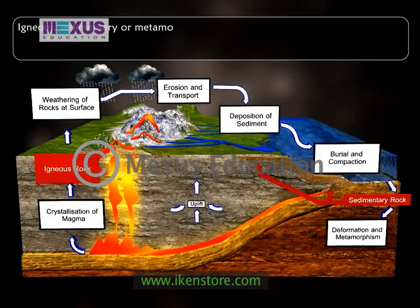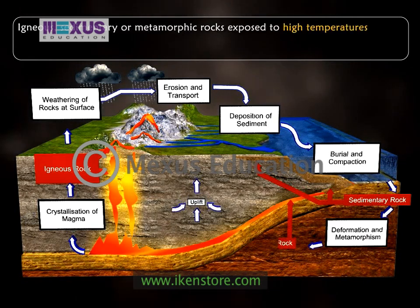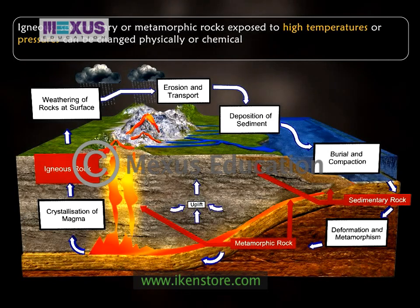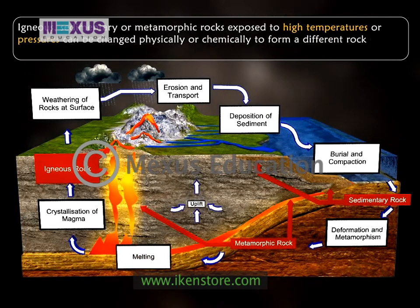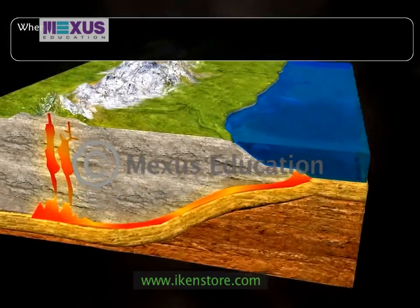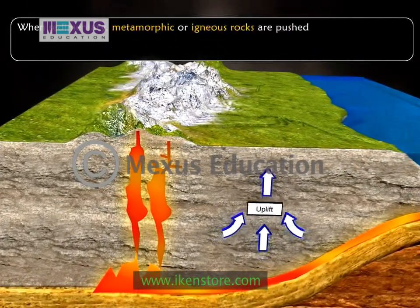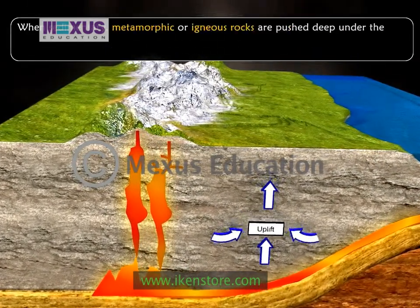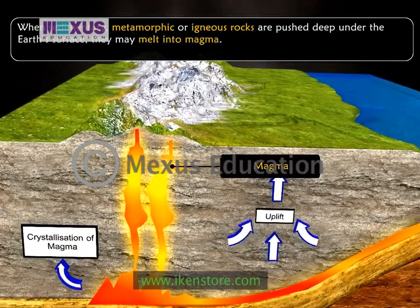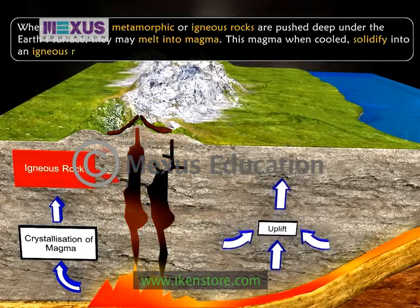Igneous, sedimentary or metamorphic rocks exposed to high temperatures or pressures can be changed physically or chemically to form a different rock called metamorphic rock. When sedimentary, metamorphic or igneous rocks are pushed deep under the earth's surface, they may melt into magma. This magma, when cooled, solidifies into an igneous rock.